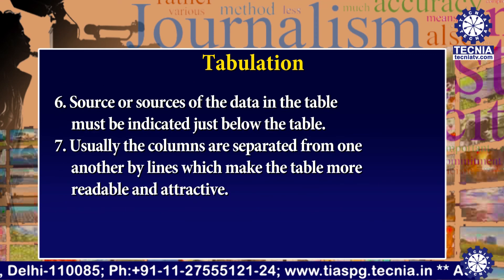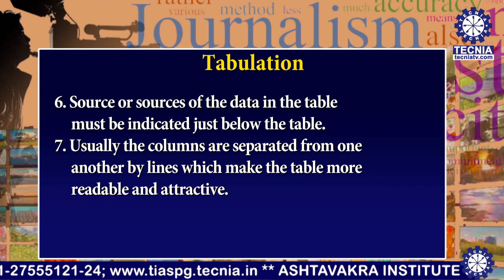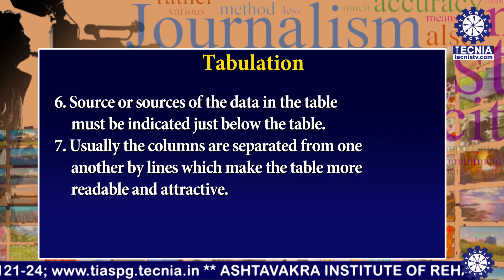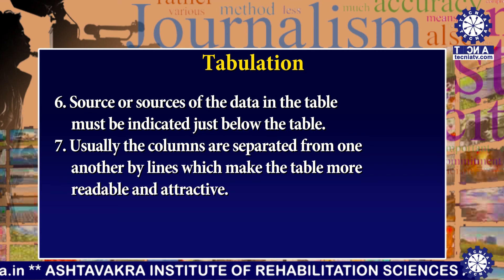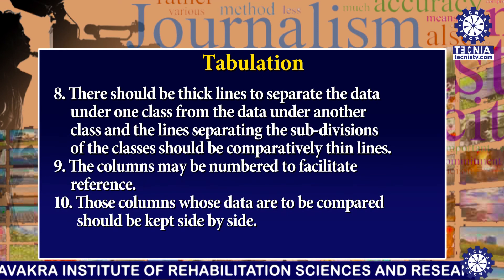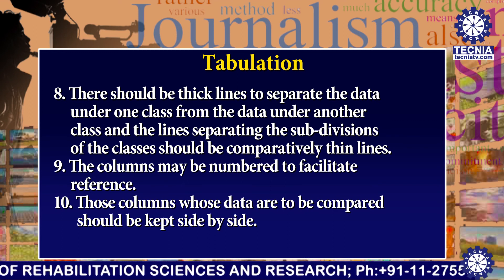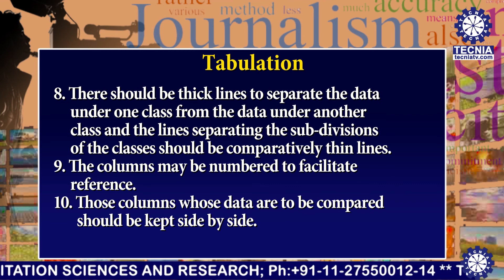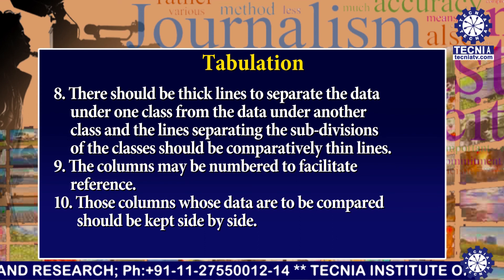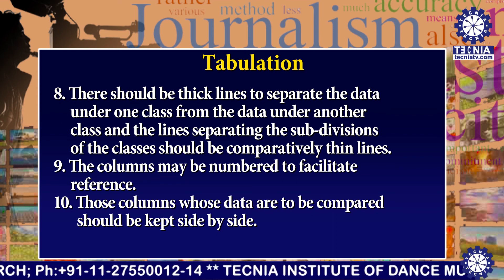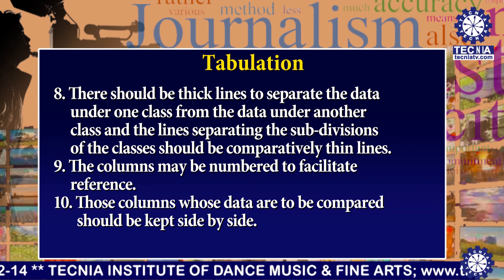Sixth, the sources of data in the table must be indicated just below the table. Seventh, columns are usually separated from one another by lines which make the table more readable and attractive. There should be thick lines to separate data under one class from data under another class, and lines separating subdivisions of classes should be comparatively thin. Ninth, the columns may be numbered to facilitate reference. Tenth, columns whose data are to be compared should be kept side by side.